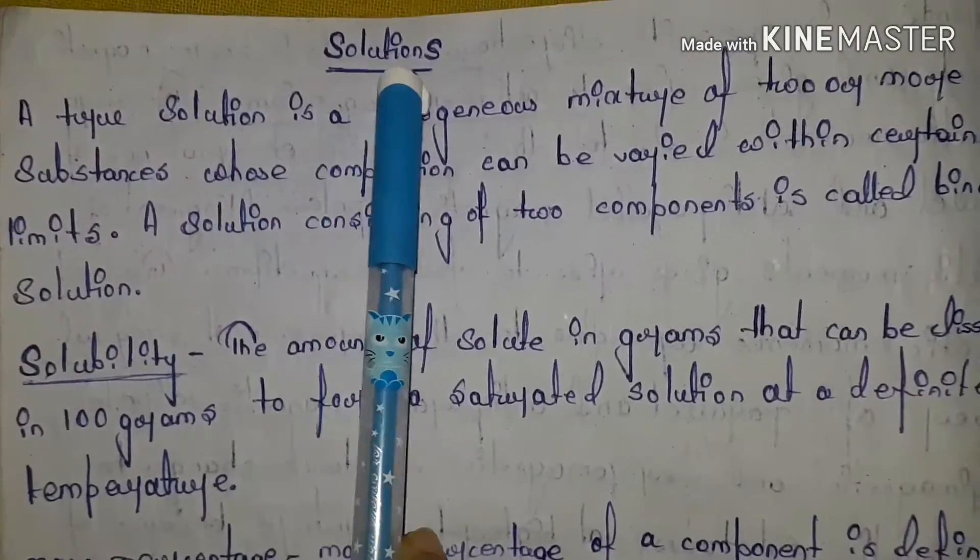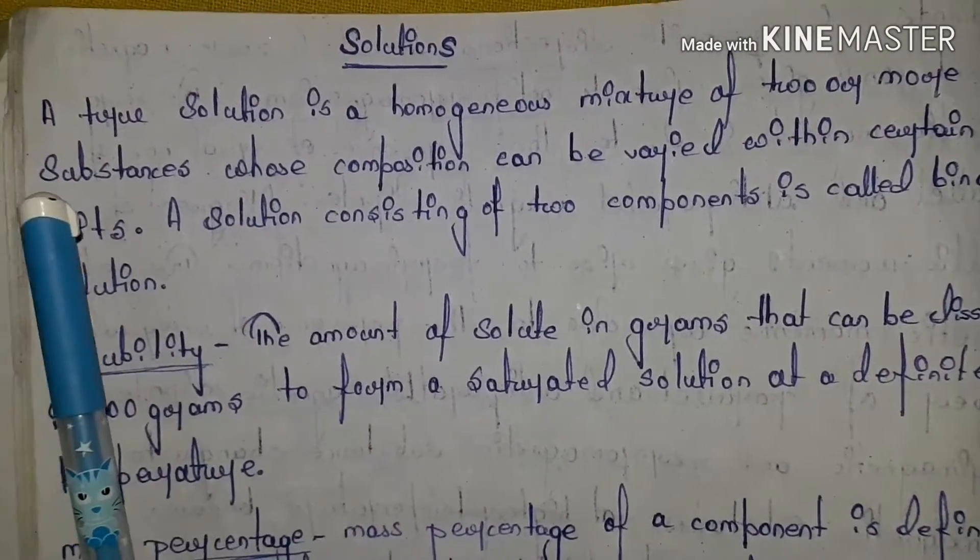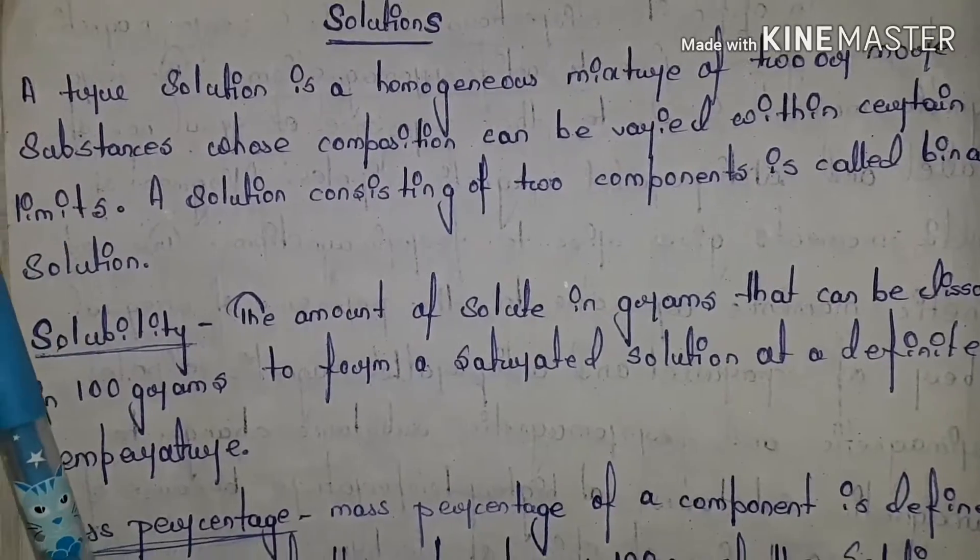It is mainly based on formulas — formulas for calculating different kinds of solutions, their properties, mixtures, and so on. Those properties of solutions. So this chapter is also numericals-based and you will always do numericals. So we will start this chapter: Solutions. First of all, what is the meaning of solutions?